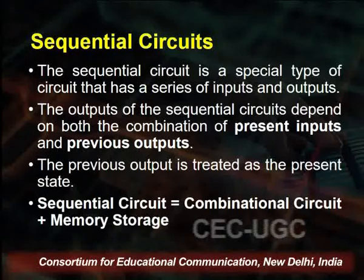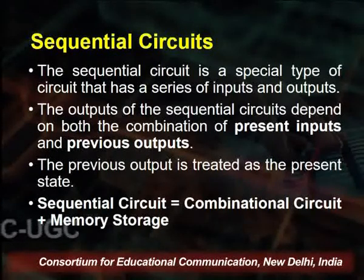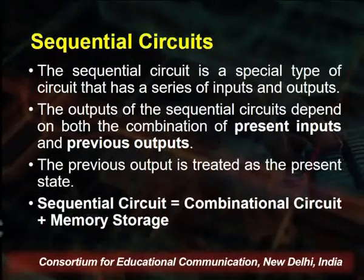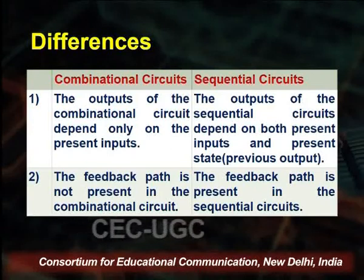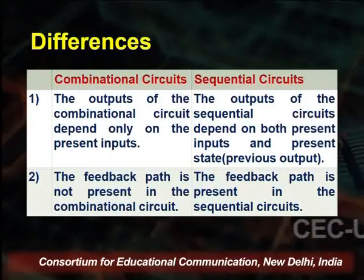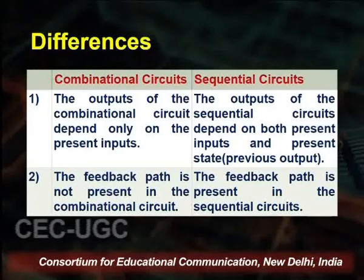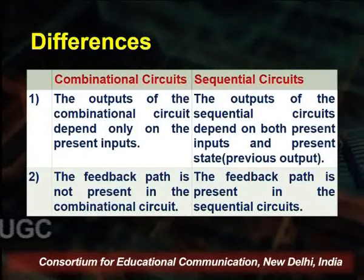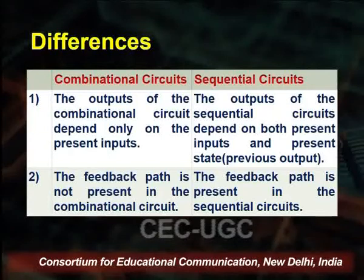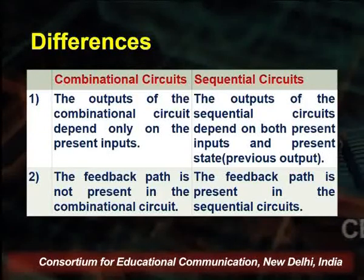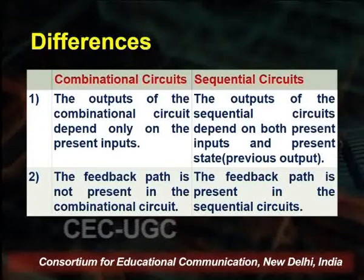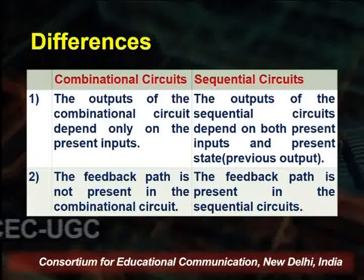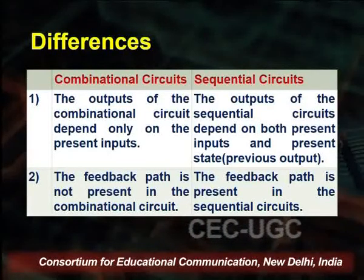The basic difference between a sequential circuit and a combinational circuit is that a sequential circuit has memory being used, whereas a combinational circuit just takes care of the inputs and gives us the output with no memory storage. Let us compare the two kinds of circuits. The output of a combinational circuit depends only on the present input, whereas in a sequential circuit, the output depends on both the present input and the present state, which is called the previous output. The feedback path is not present in a combinational circuit because we take only the inputs from the current state.